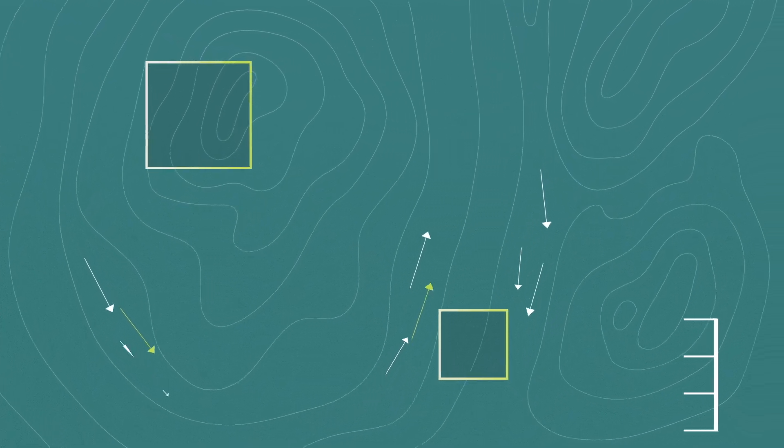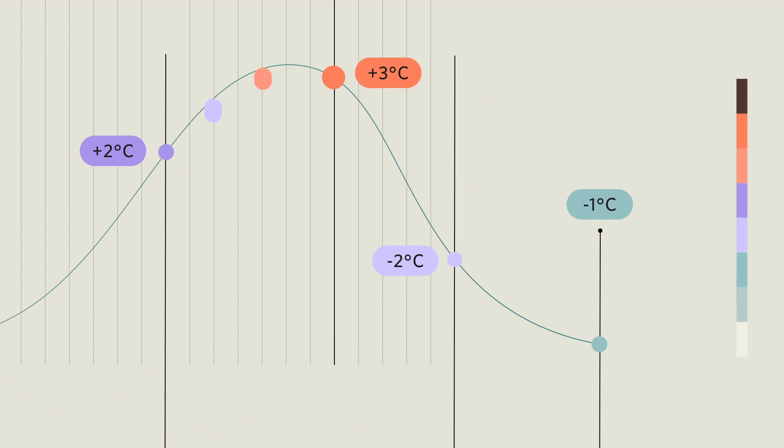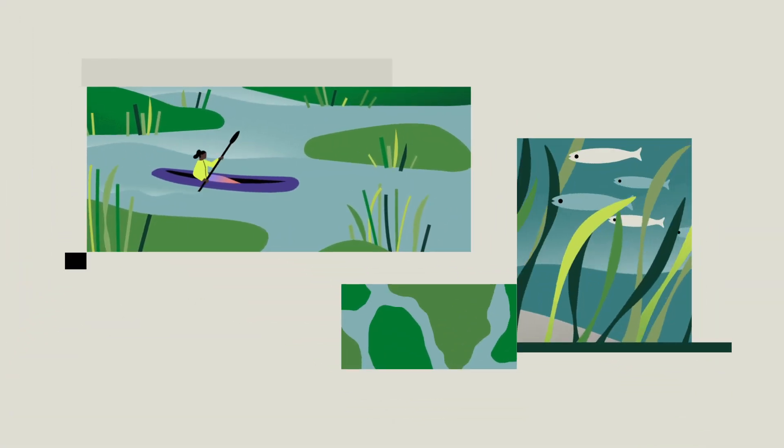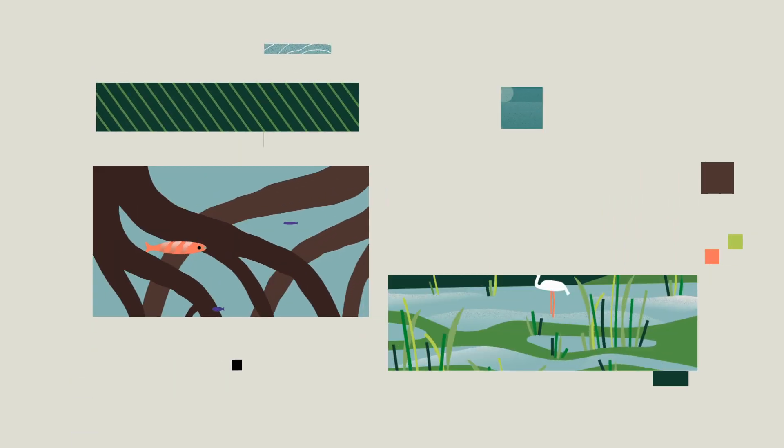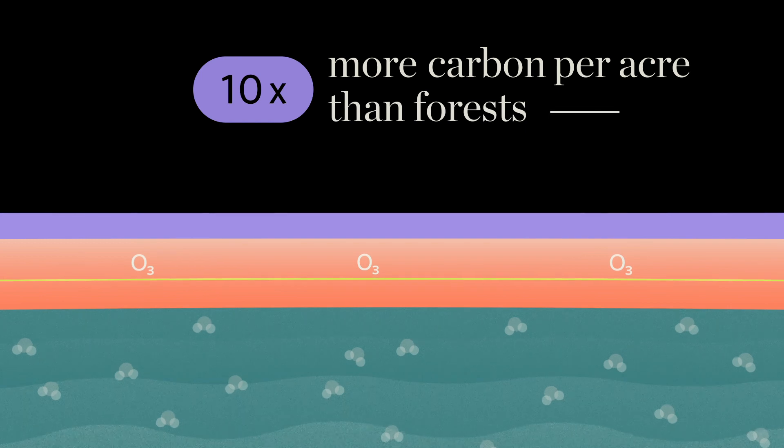And parts of the ocean are real superheroes when it comes to preventing further global warming. Coastal habitats like salt marshes, seagrasses, and mangroves can store up to 10 times more carbon per acre than forests on land.